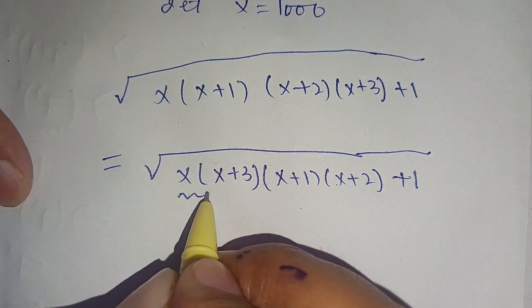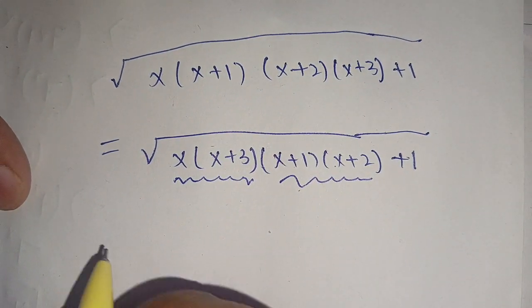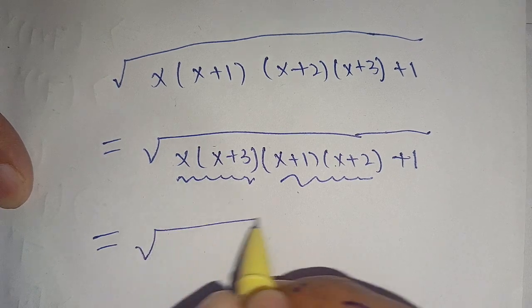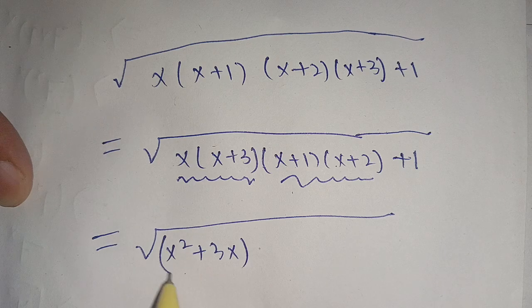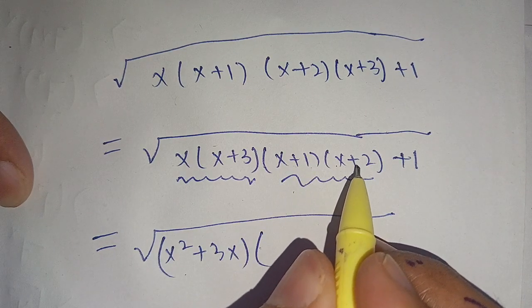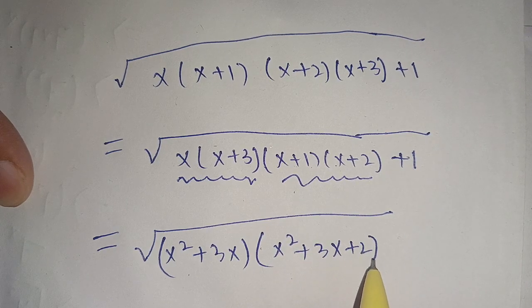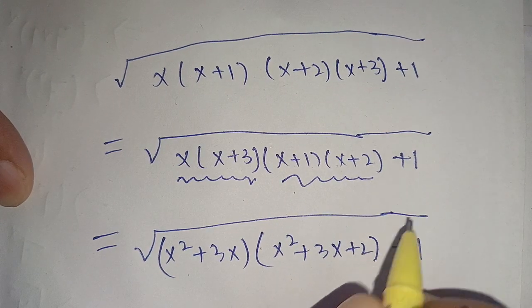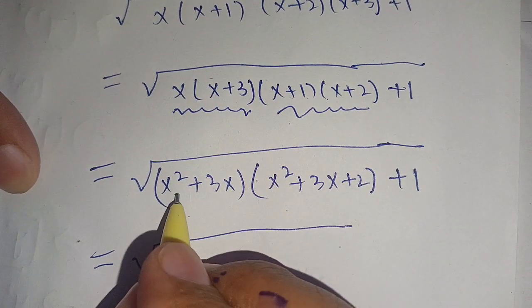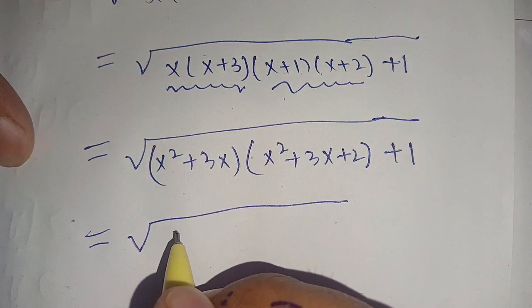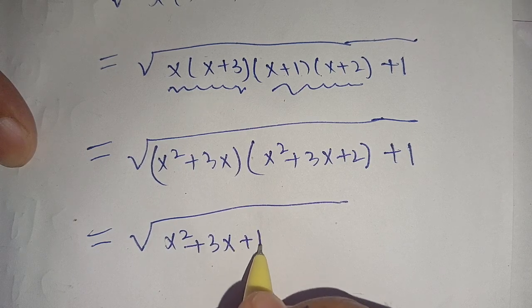We can multiply x times (x+3) and (x+1) times (x+2). The multiplication gives us: x(x+3) becomes x²+3x, and (x+1)(x+2) becomes x²+3x+2, plus 1 as it is. In the next step we can write x²+3x as x²+3x+1 minus 1.